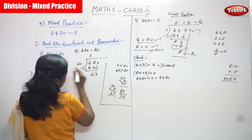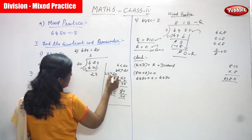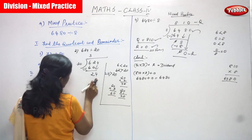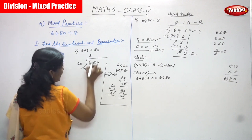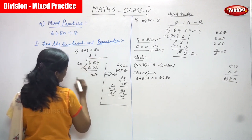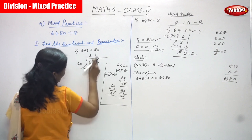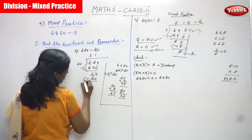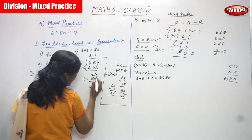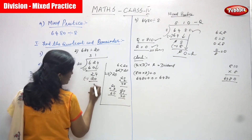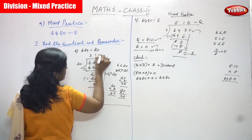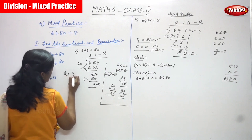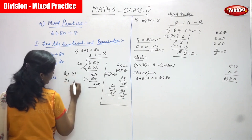So 24 — is 24 greater than 20? Yes. In 24, 20 goes how many times? Only one time. 20 ones are 20, 1 into 20 gives 20. So 24 minus 20: 4 minus 0 gives 4. So the remainder is 4 and the quotient is 31. Quotient is 31 and remainder is 4. This is the exact answer.